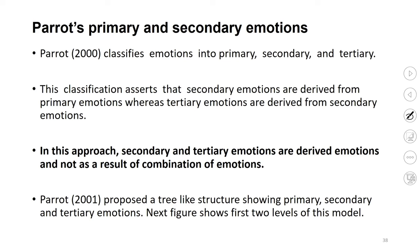Another theory of basic emotion is Parrott's primary and secondary emotions. In 2000, Parrott classified emotions into primary, secondary, and tertiary. This classification asserts that secondary emotions are derived from primary emotions, whereas tertiary emotions are derived from secondary emotions. This differs from Plutchik's model, where advanced emotions are composed of a combination of two primary emotions. In Parrott's approach, secondary and tertiary emotions are derived from the primary emotions, not as a result of combination.